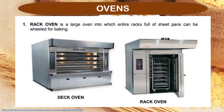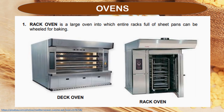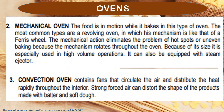The rack oven is a large oven into which entire racks full of sheet pans can be wheeled for baking. The mechanical oven is one where food is in motion while it bakes. The most common type is the revolving oven, whose mechanism is like that of a Ferris wheel. The mechanical action eliminates the problem of hot spots or uneven baking because the mechanism rotates throughout the oven. Because of its size, it is especially used in high-volume operations and can also be equipped with a steam ejector.